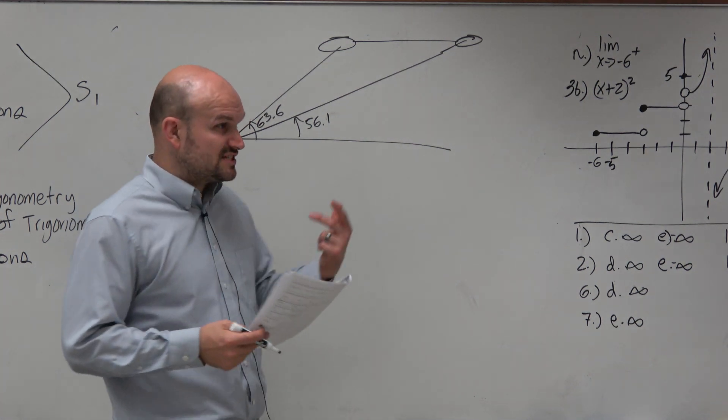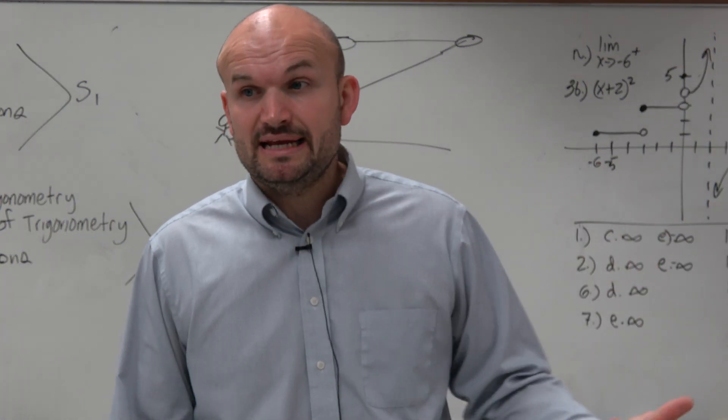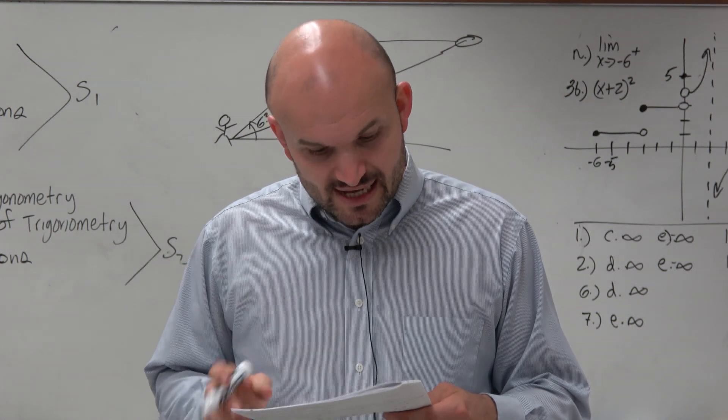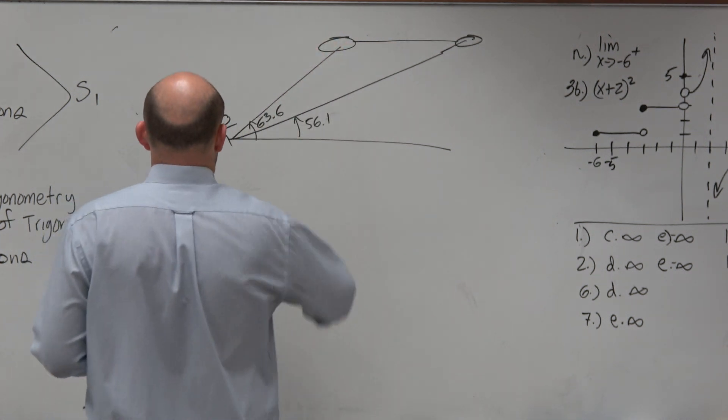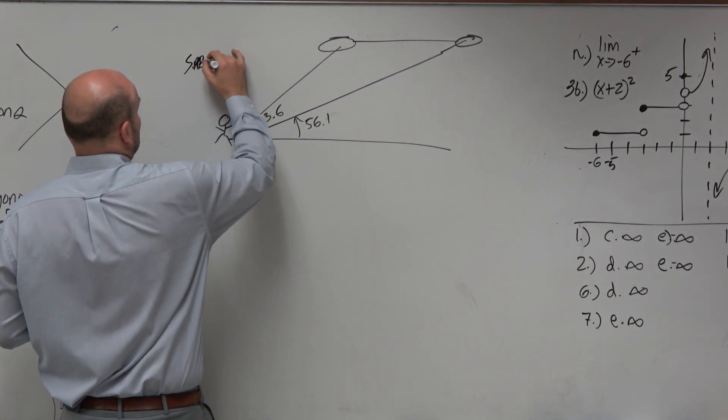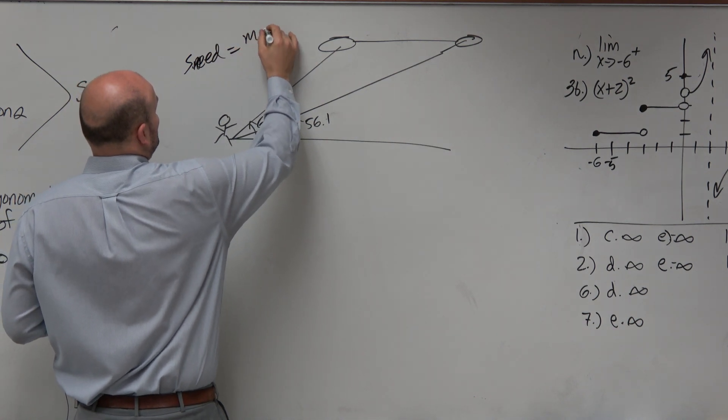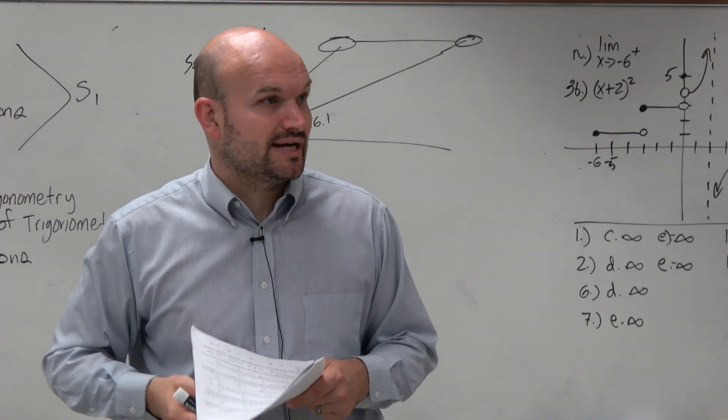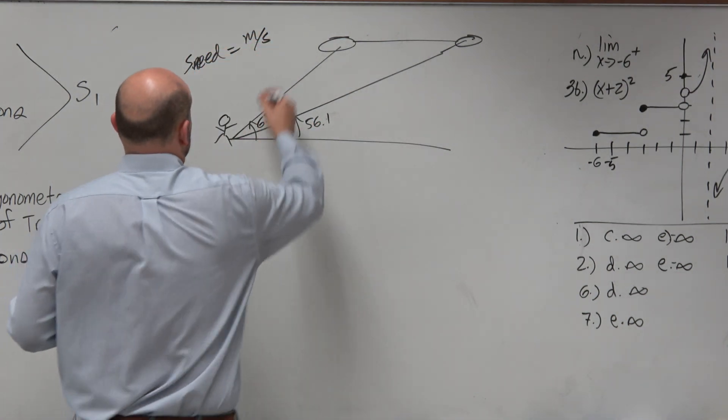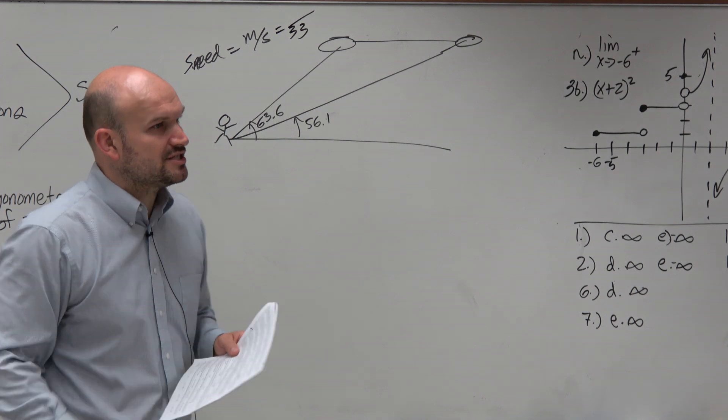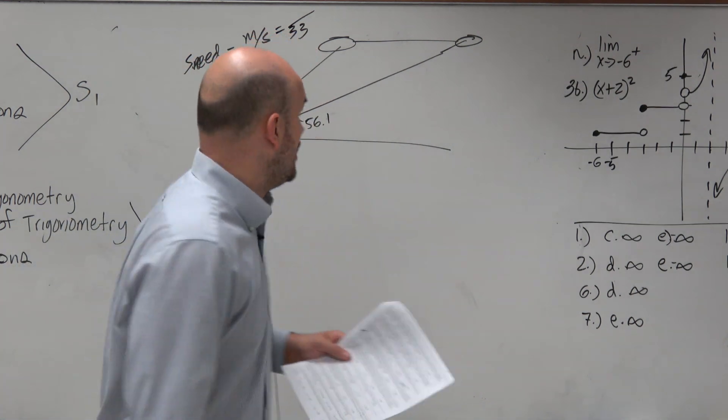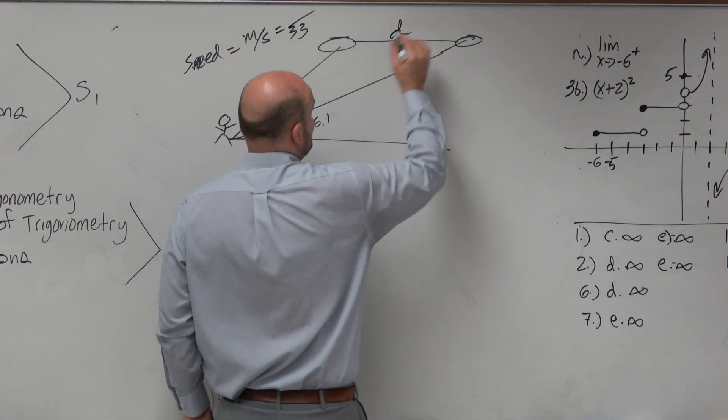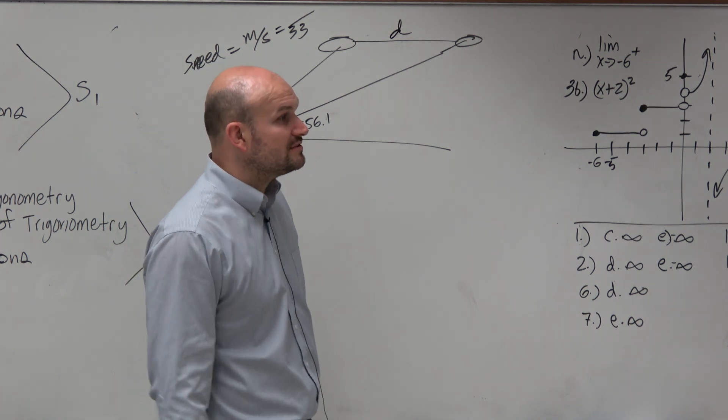Now, they're asking us for the speed. To understand the speed, it says meters per second. So the speed is per second. We know the seconds, that's 33. We just don't know how many meters the plane traveled. So let's say distance is what we want to figure out. We've got to figure out the distance.